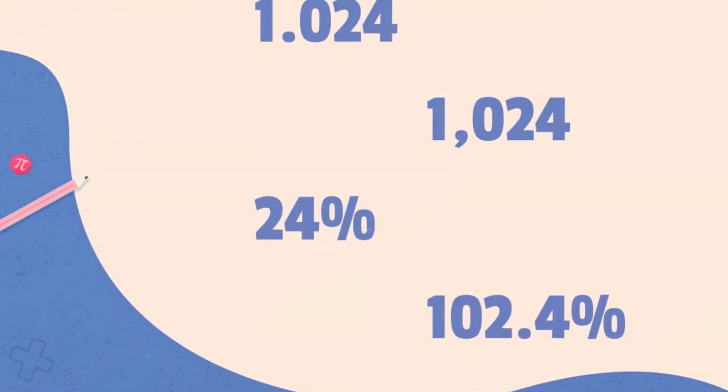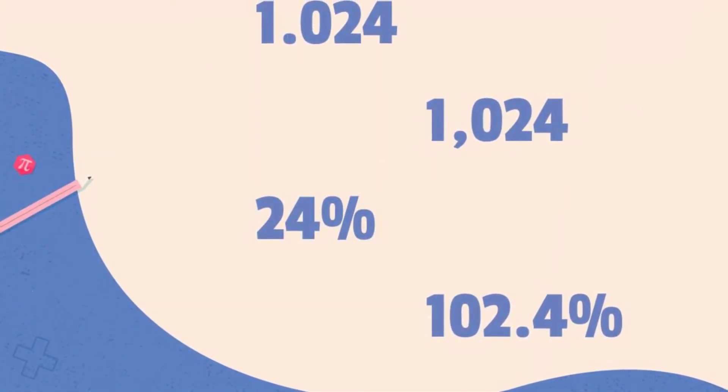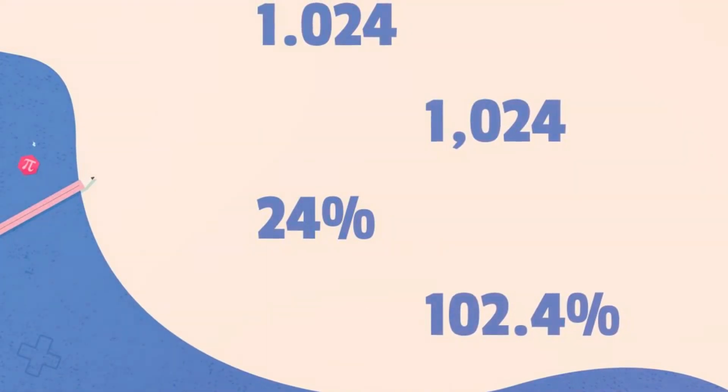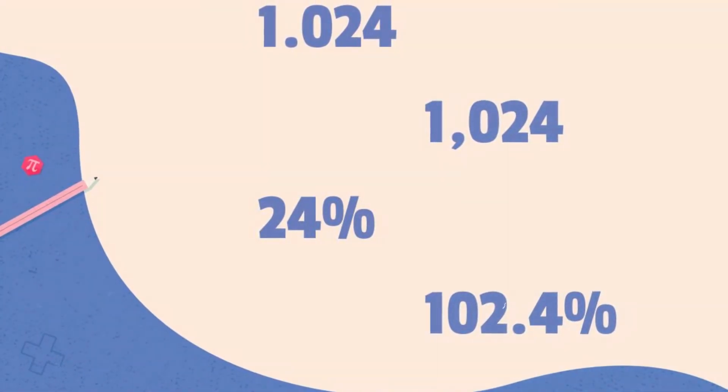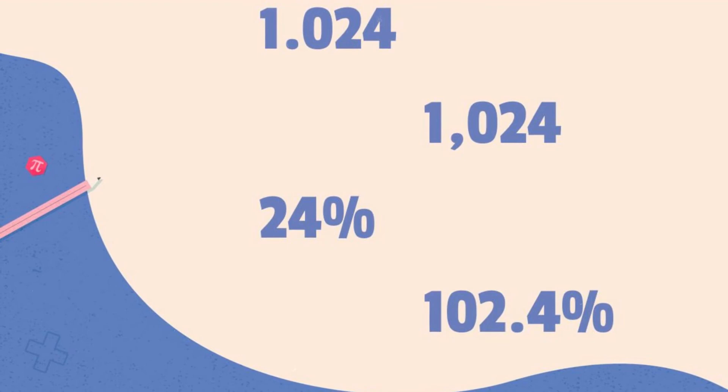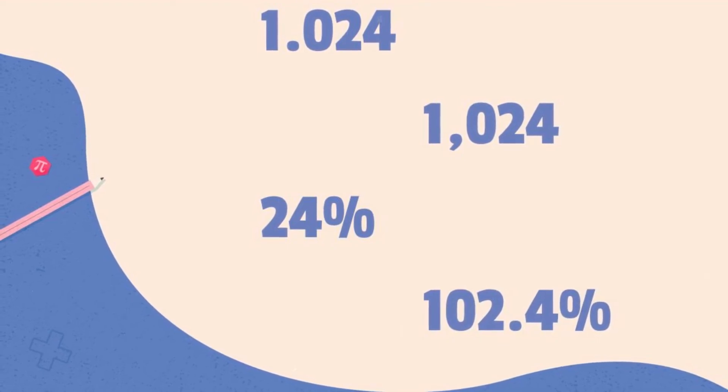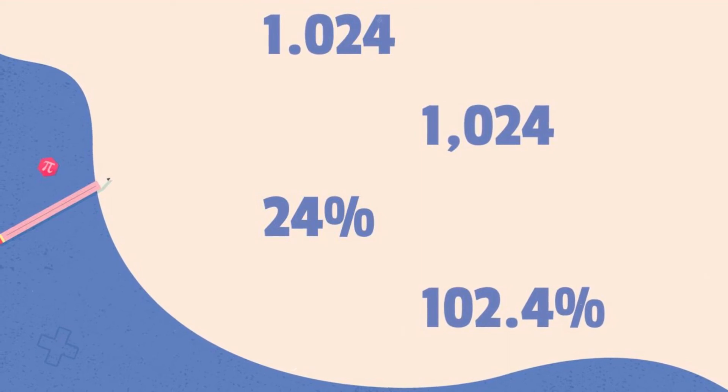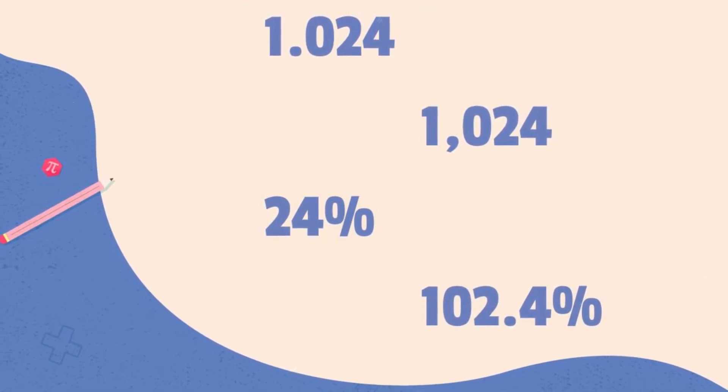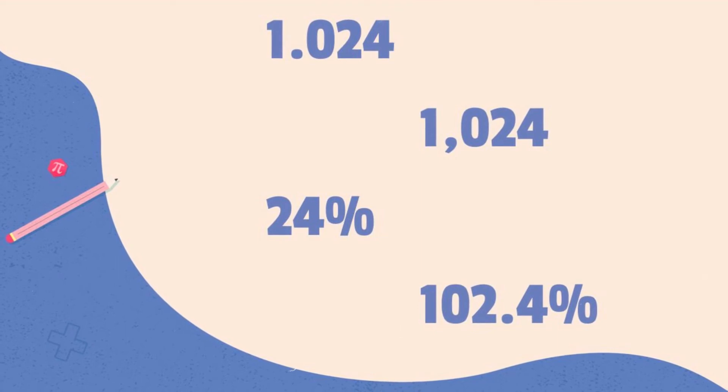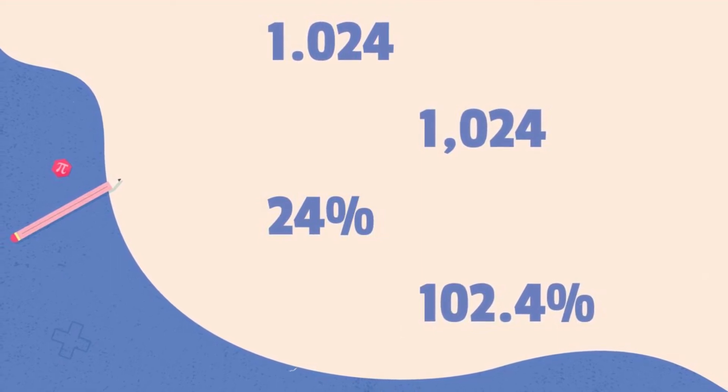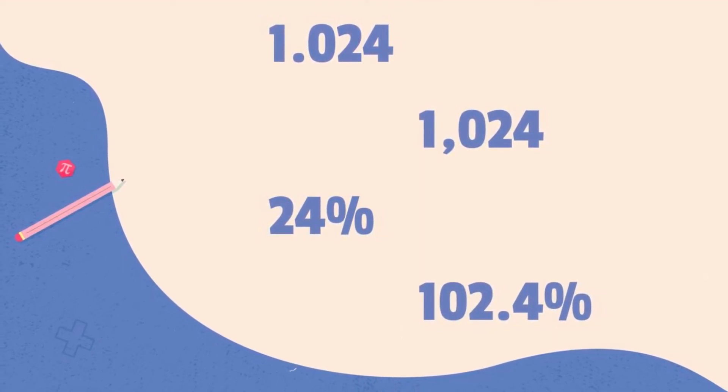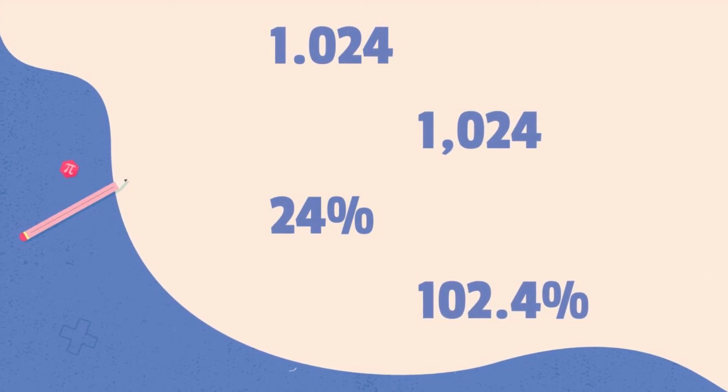What about these numbers? Well, the first one here is 1.024, while the second one with the comma is 1024. Notice the difference that point represents decimal and the comma represents thousand. Then we have 24% and 102.4%.